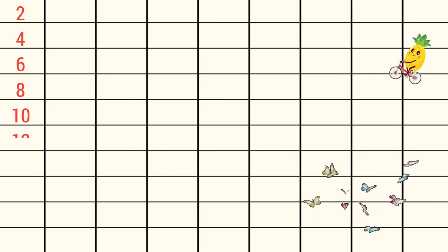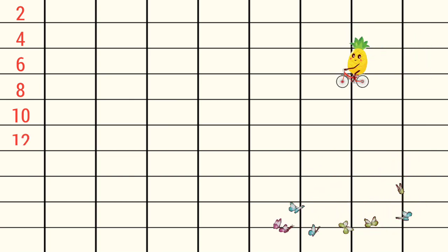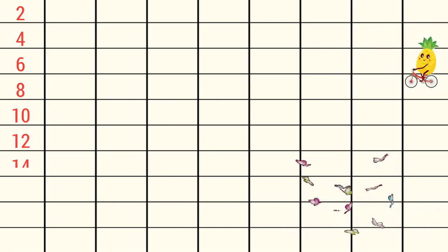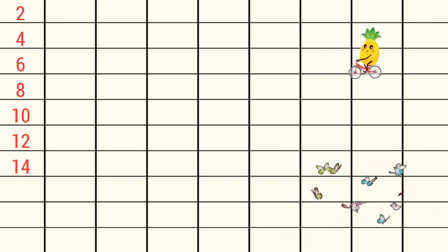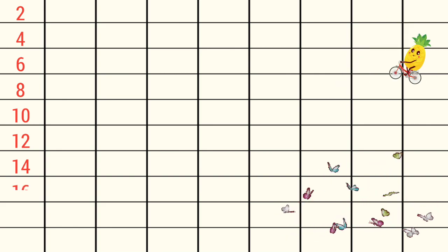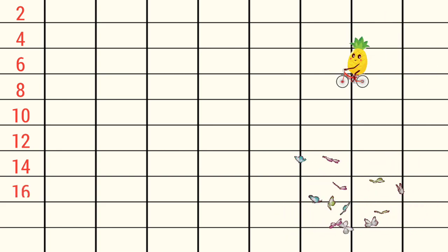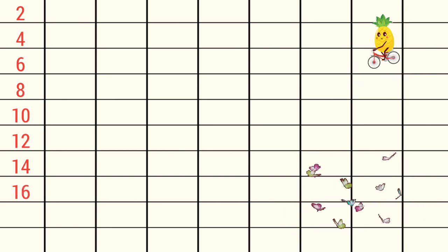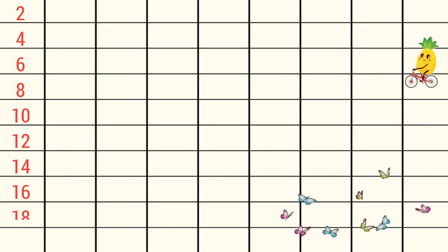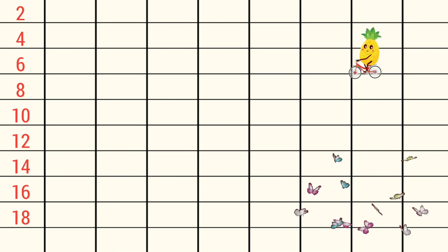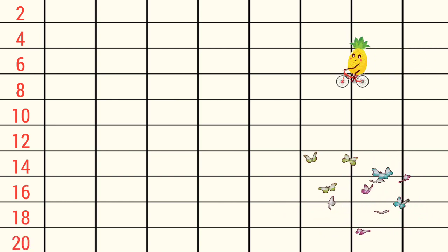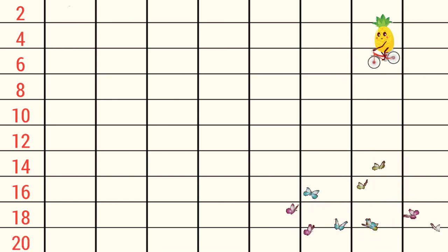2 6s are 12, 2 7s are 14, 2 8s are 16, 2 9s are 18, 2 10s are 20.